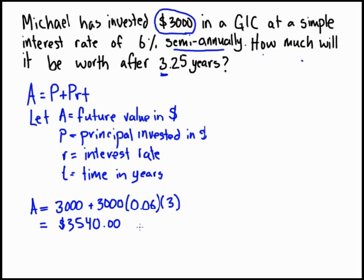The key thing is: if we're asking for future value, make sure you use this formula. And if the interest rate is semi-annual, we can only use time values of whole numbers like 3 or half numbers like 3.5. Because this is 3.25, we can only put in a value of 3. Once we do that, we calculate it and get $3,540. That's a good example question you can use to do your homework.